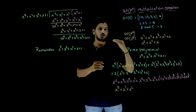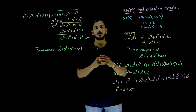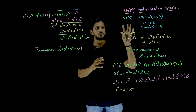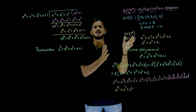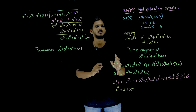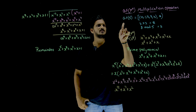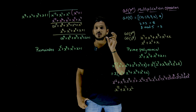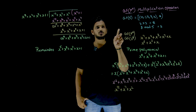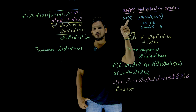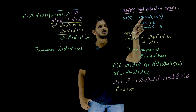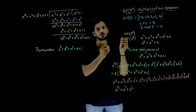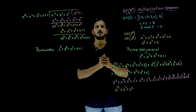Before we move on to multiplication operation, let us try to refresh one important concept. Based on this concept, you will easily understand the remaining things. What we have done in our GF of 5 multiplication operation — the set of elements that belongs to GF of 5, where 5 is a prime number. The set of elements are 0, 1, 2, 3, 4. On this set of elements, you have to do multiplication operation.